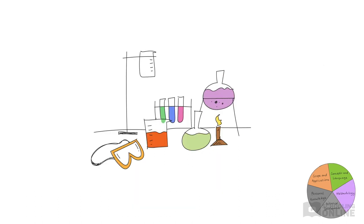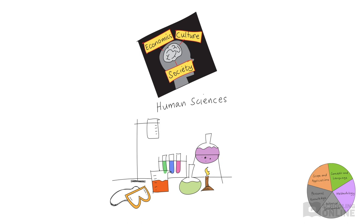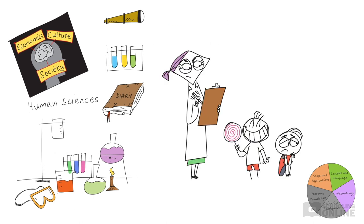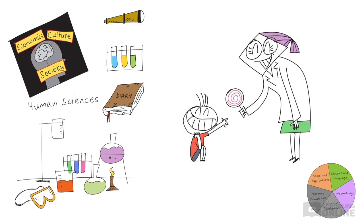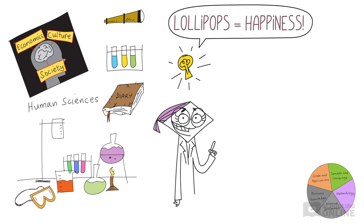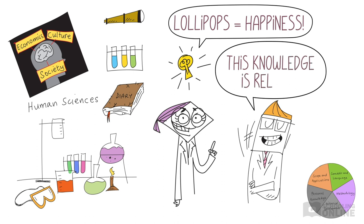This means that using a reliable methodology is incredibly important for producing accurate knowledge in the human sciences. Many disciplines in the human sciences rely on the scientific method. Social scientists will often make observations about human behaviour and societies, create hypotheses, test these hypotheses through experimentation, then generalise their findings into reliable and more broadly applicable conclusions. These findings generally need to be consistent with other accepted knowledge in the area.